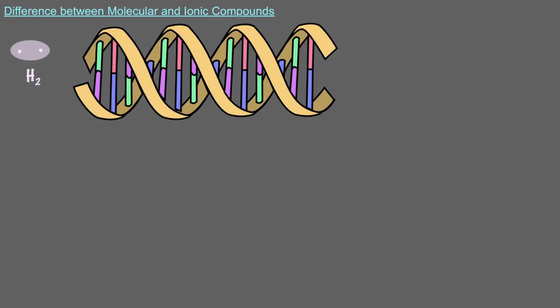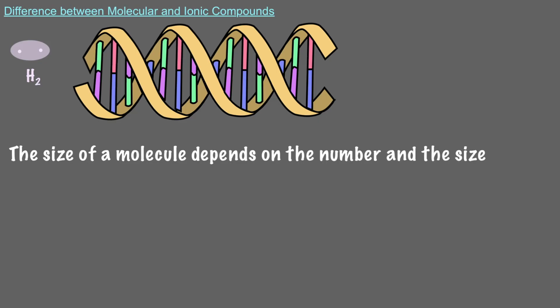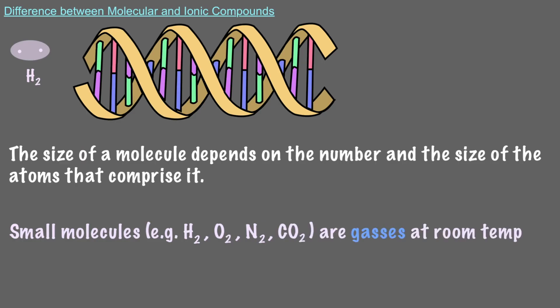Molecular compounds can vary in size from very small, like H2, to extremely big, like the DNA molecules inside our cells. The size of a molecule depends on the number and the size of the atoms that comprise it. Small molecules, like H2, O2, N2, or CO2, for example, are gases at room temperature. Big molecules are solid or liquid at room temperature.